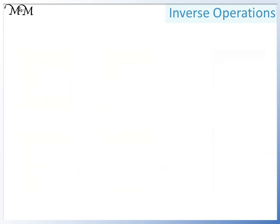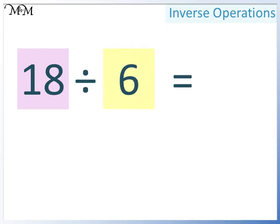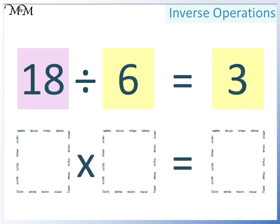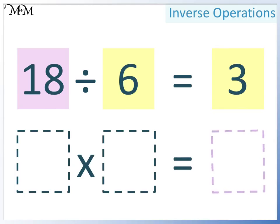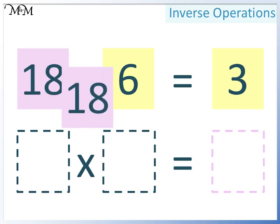Here's another example: 18 divided by 6 equals 3. A large number divided by a smaller number equals another smaller number. We want to write this as a multiplication. Two smaller numbers multiply together to make a larger number, so the largest number — 18 — must go here.